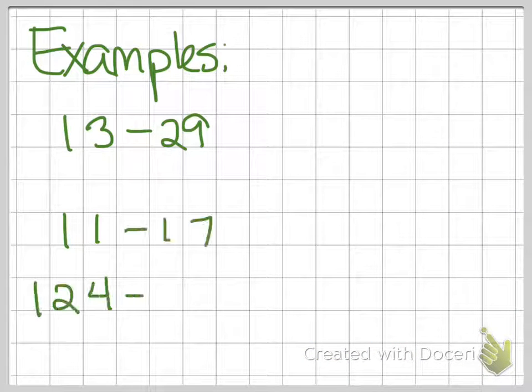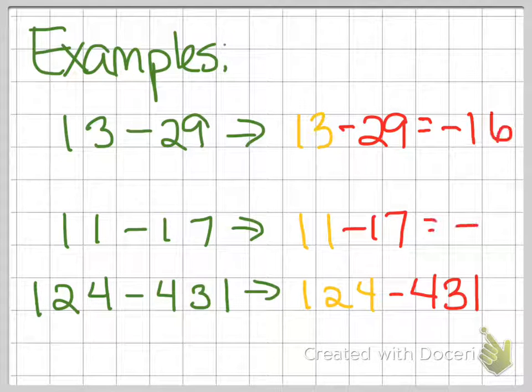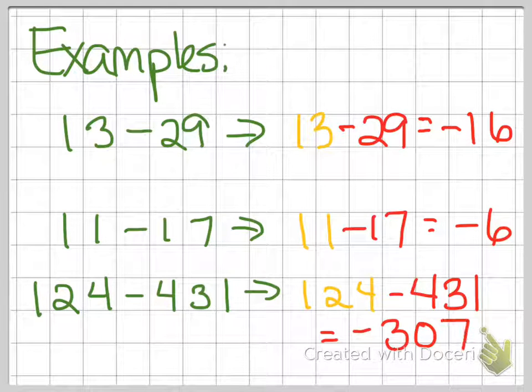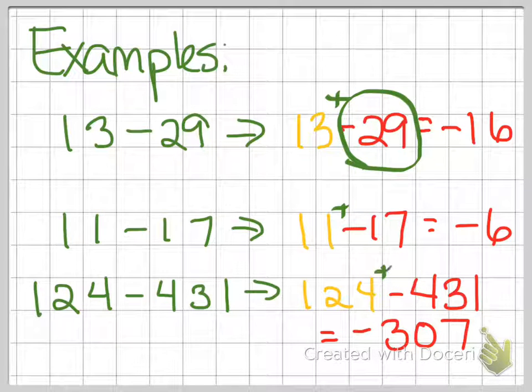Here are some more examples for you to look at. 13 minus 29, 11 minus 17, and 124 minus 431. Rewriting these equations, we have 13 plus negative 29. I didn't write that because I used the red color for you to see it. That's 11 plus negative 17, and 124 plus negative 431. If you want, go ahead and write in those little plus symbols if it makes it easier for you to see, but I was hoping that the different colors would help you see what was going on there.